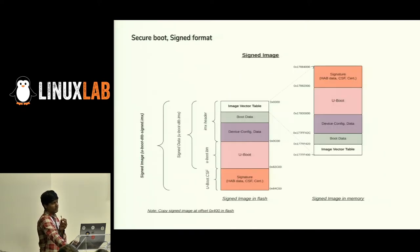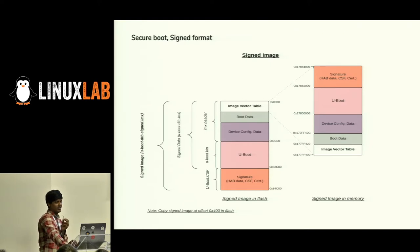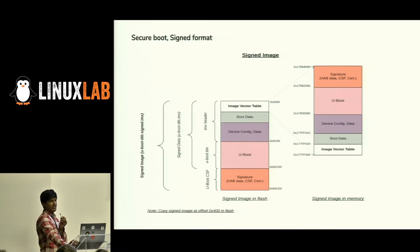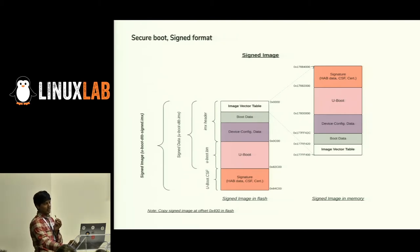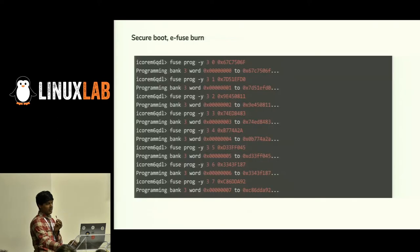This is how the signed image looks at the end: there's uboot.bin and a signature section created by the MX CST tool. At the end it creates an image with a hash algorithm. These hashes are calculated based on the eFuse-burned image. Once both are validated, it will boot. This is called typical signed booting, and this is how you burn to eFuse.